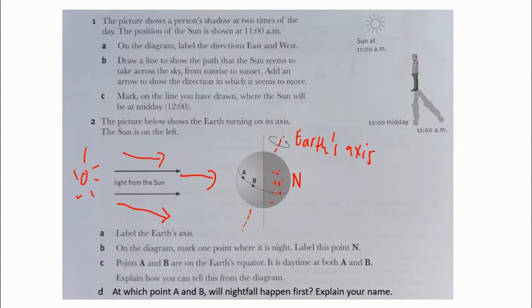Part C: Points A and B are on the Earth's equator. It is daytime for both A and B. Explain how you can tell this from the diagram. A and B are on the Earth's equator and they are both in the half that is lit up by sunlight.